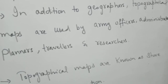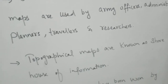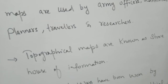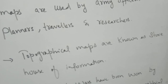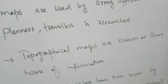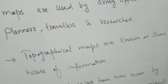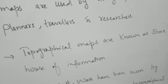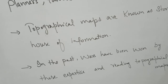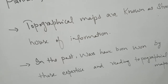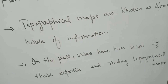For army officers, topographical maps are most commonly and widely used when they are entrusted to make a plan of any area. Because of their information and importance, these maps were known in the past as a 'storehouse of information.' In the past, when there were no other basic equipment to store information for a long period of time, these maps covered and stored the information. It is also considered that wars have been won by the expertise of topographical map making and knowing how to read these maps.